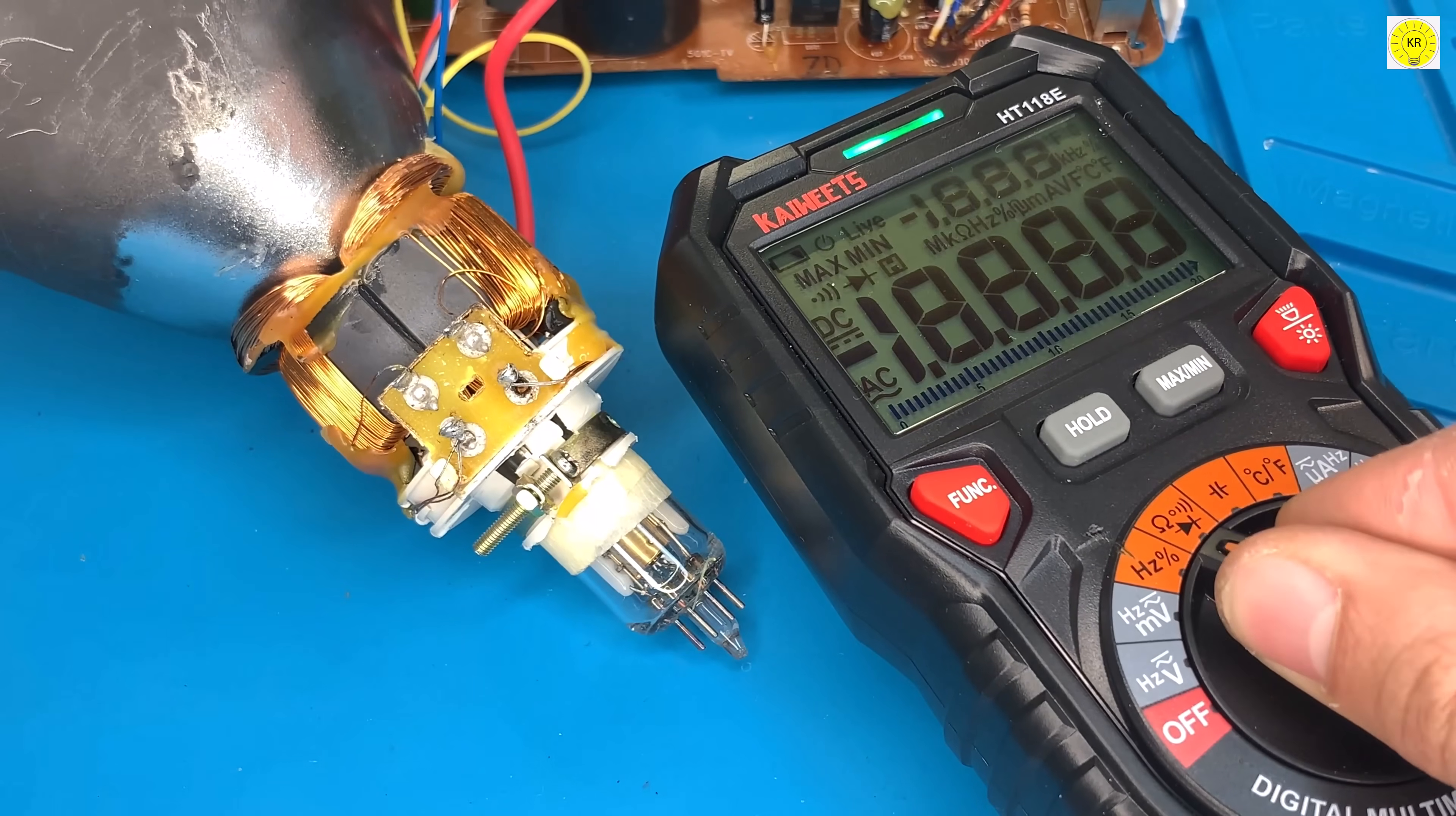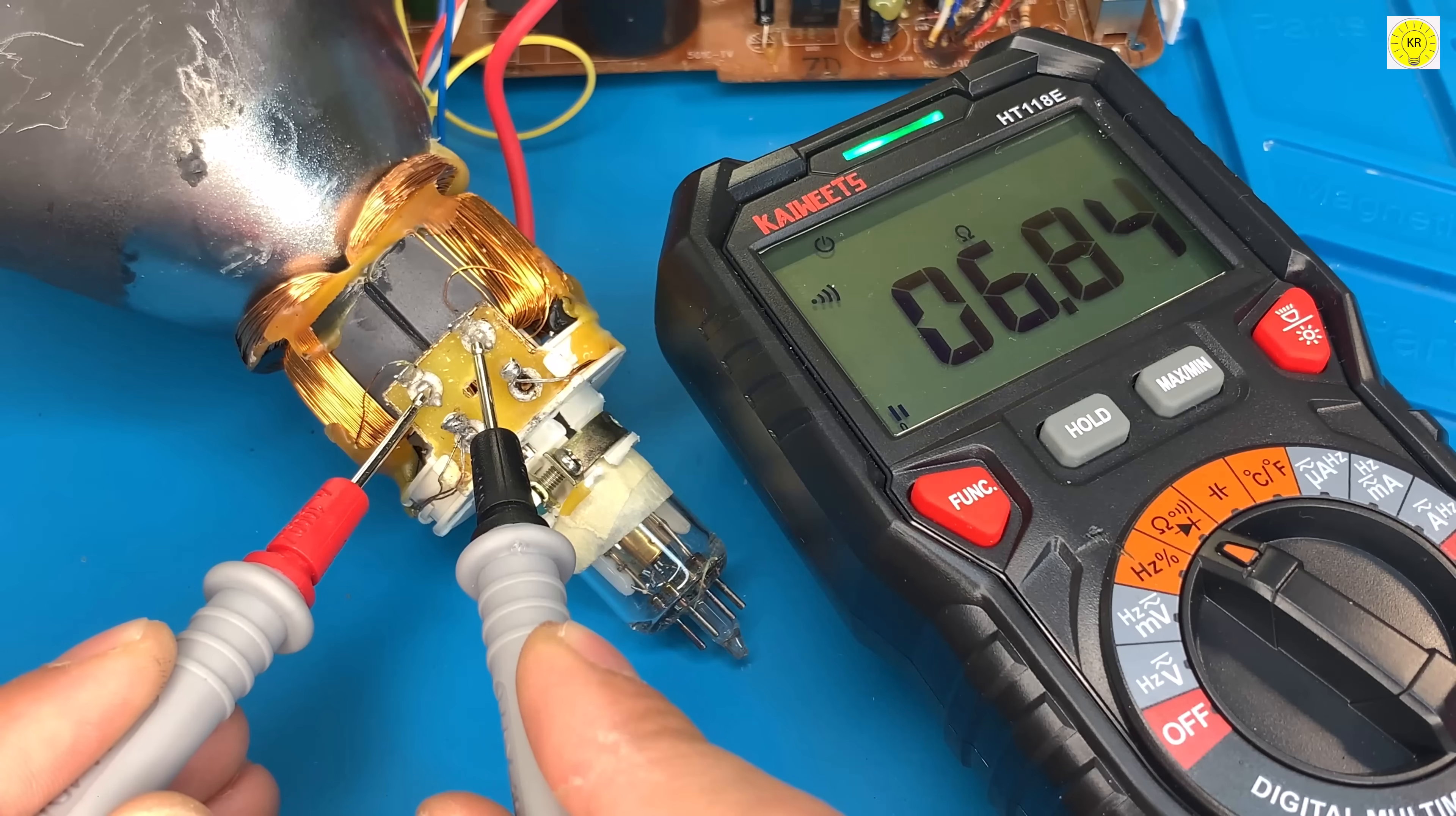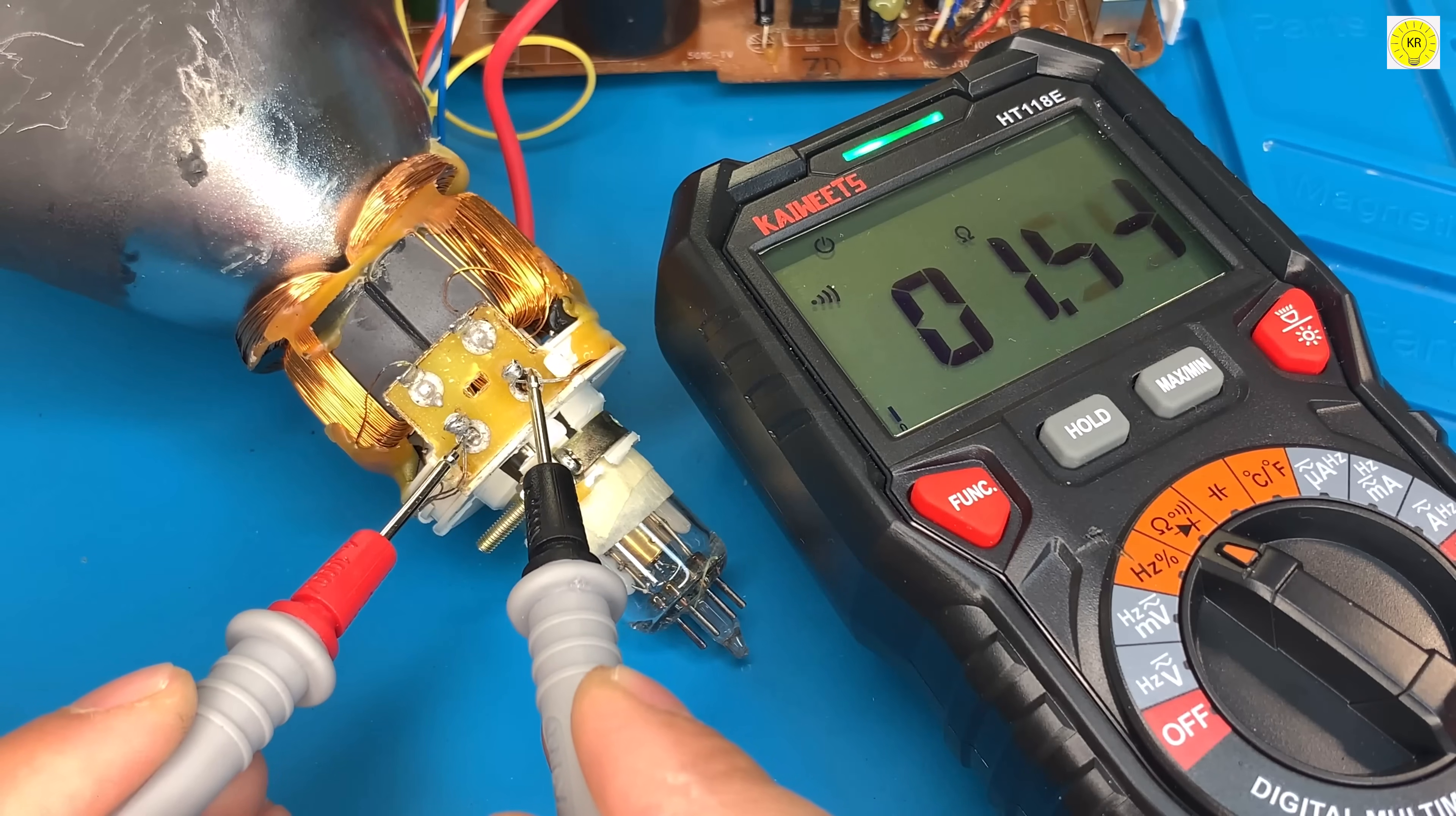Now we measure the resistance of both deflection coils. A coil whose resistance is about 6 ohms is a vertical coil. As for the coil whose resistance is about 1 ohm, it is a horizontal coil.